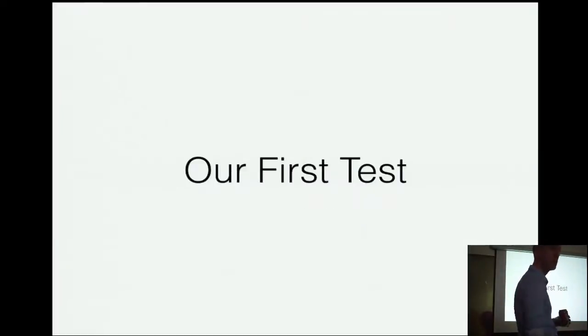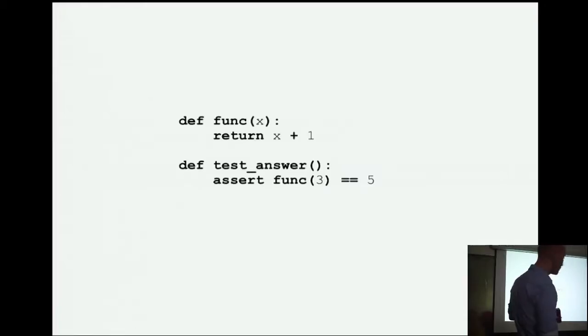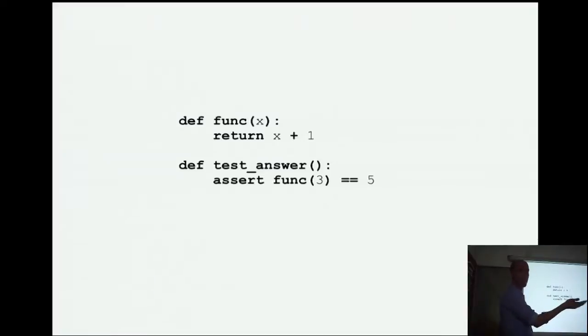So, our first test, this is just going to come straight off of the PyTest examples on their website. Can you guys read that okay in the back? Awesome. Right. So, we have a function, takes some x in and adds one to it. And, we have another method here called test_answer. I guess it's a function because it's not in the class, but anyway. It starts with test underscore. It can have anything after that. PyTest will automatically discover anything that has test underscore as a function or method name.